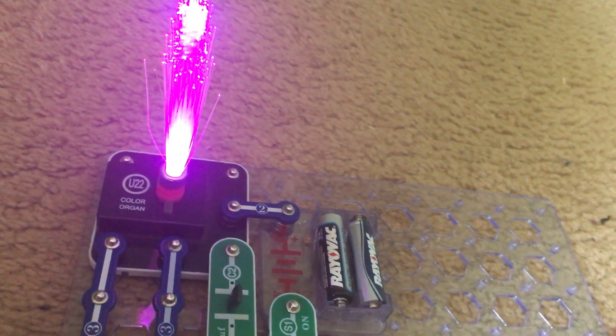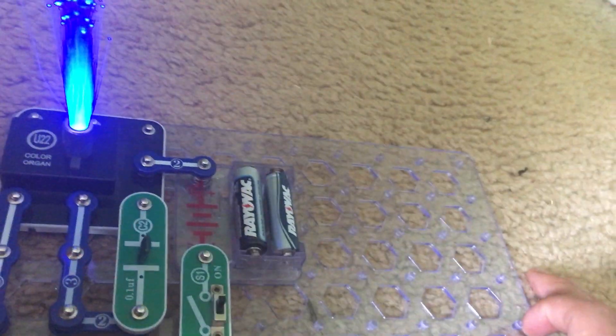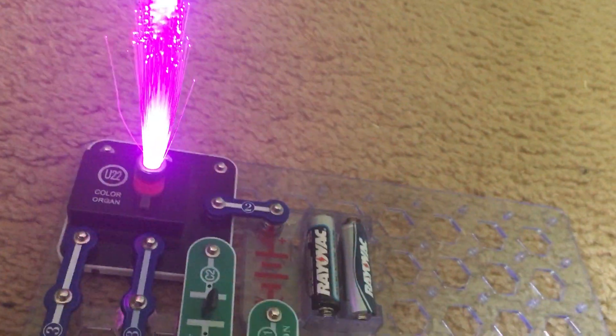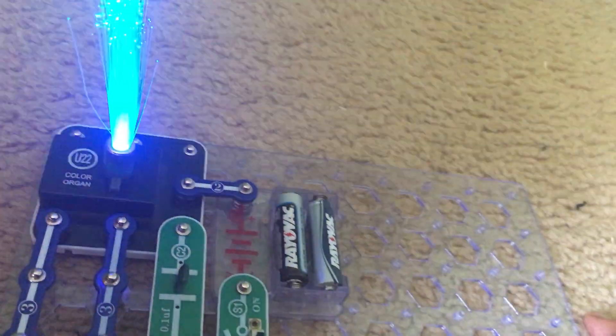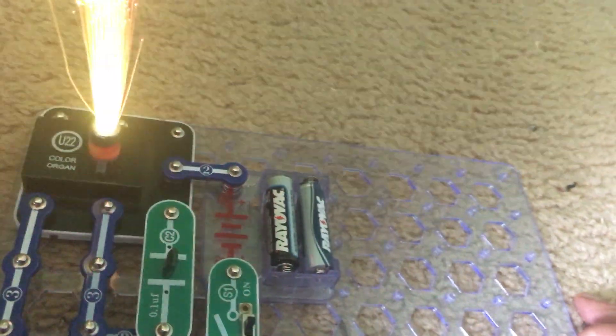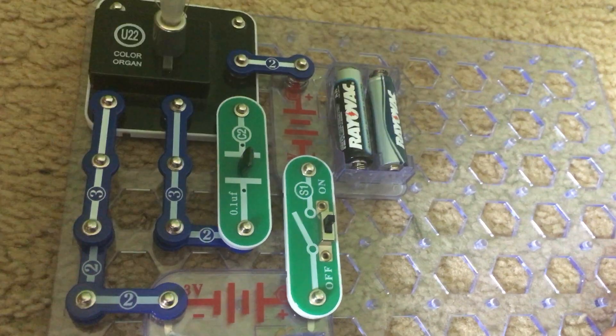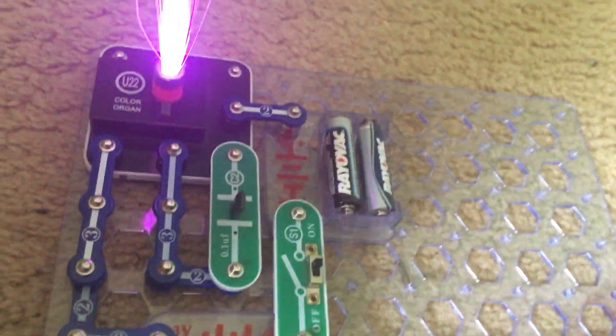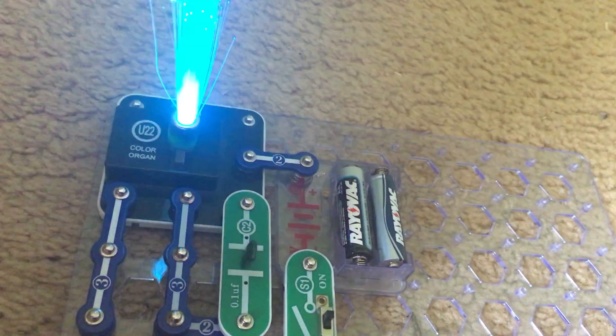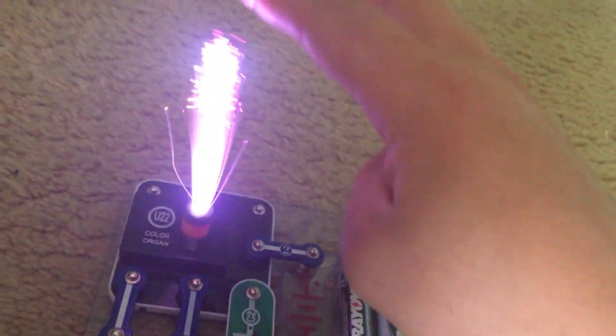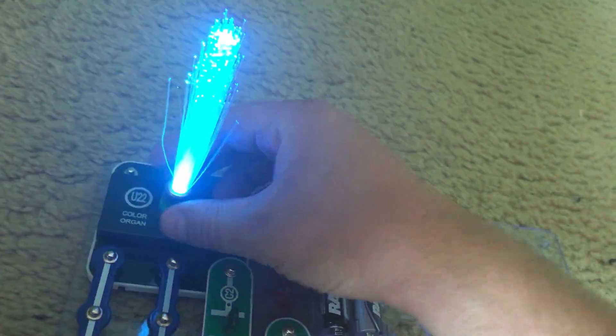That is because an oscillator works on its own. The color organ is controlling itself with the wiring setup that I have. And as you can see I have the fiber optic tree to make it look more spectacular.